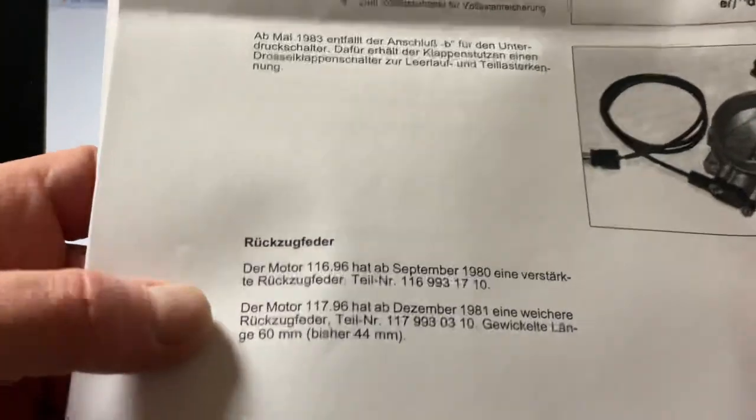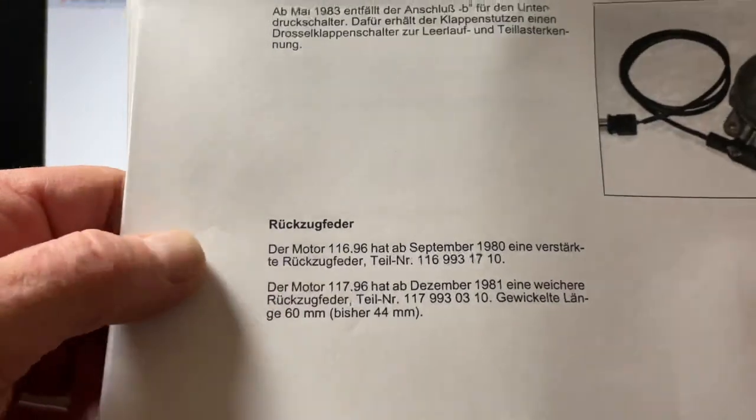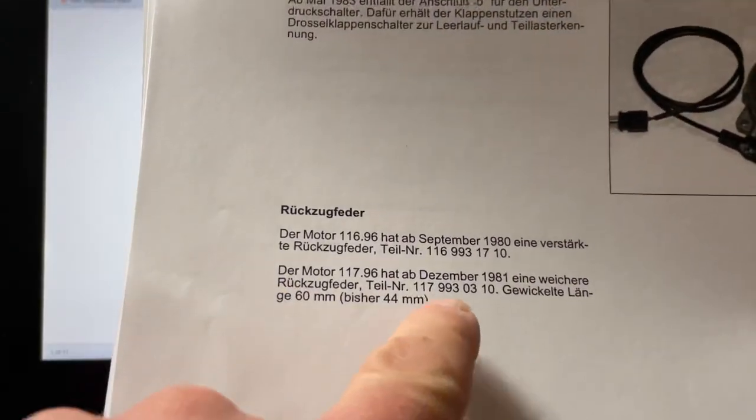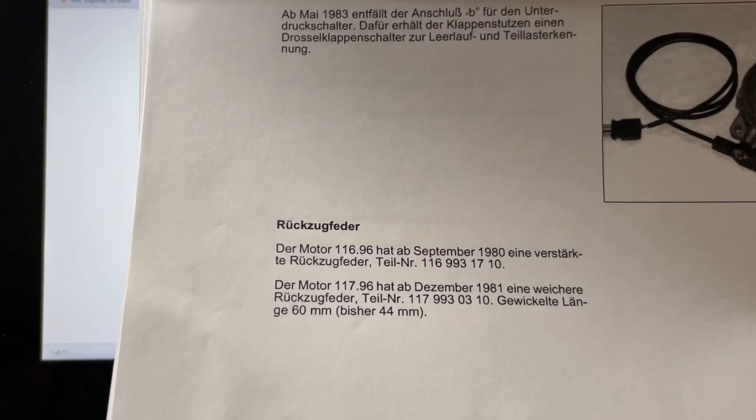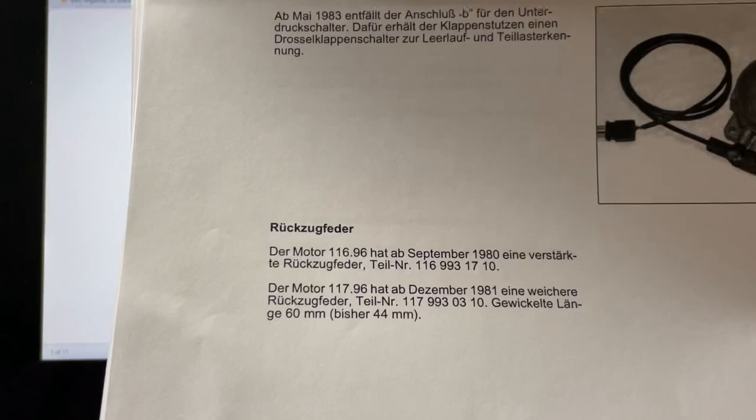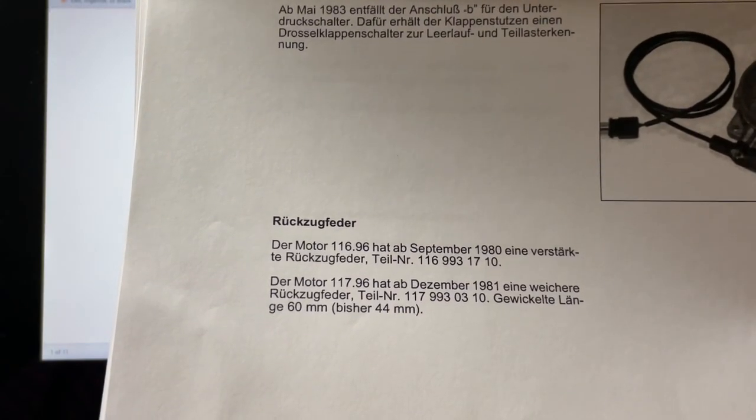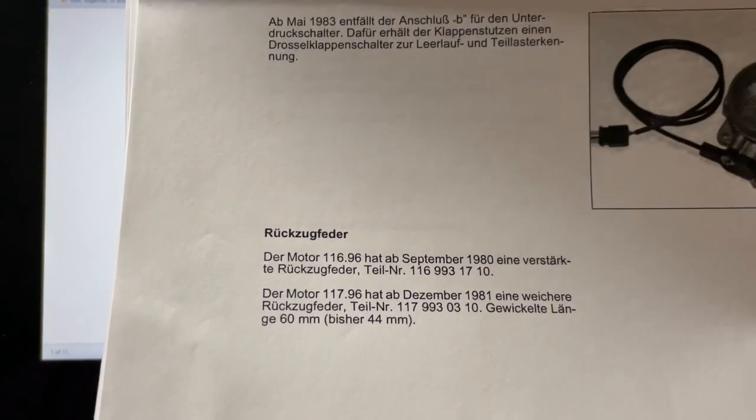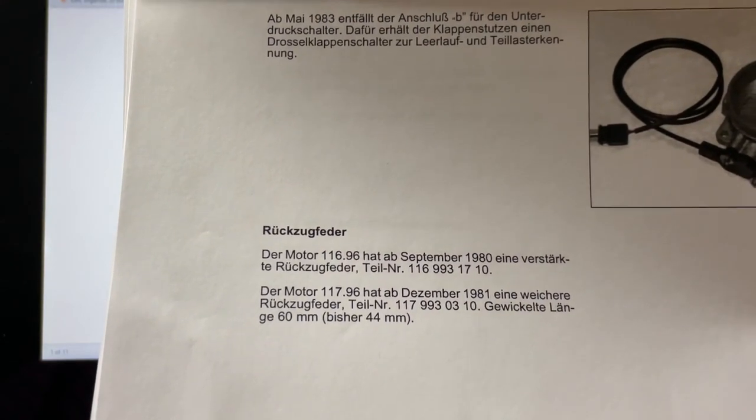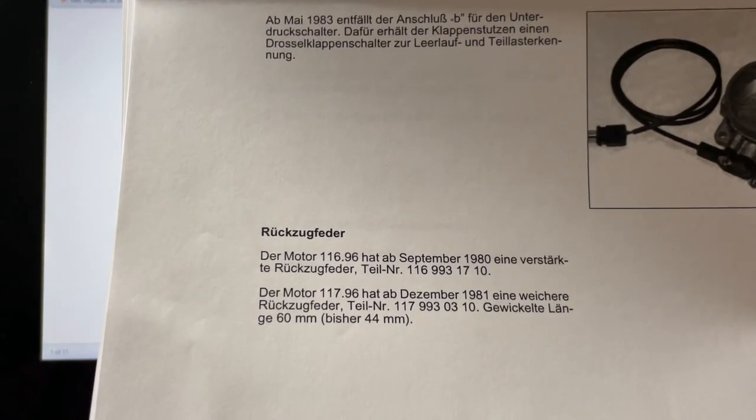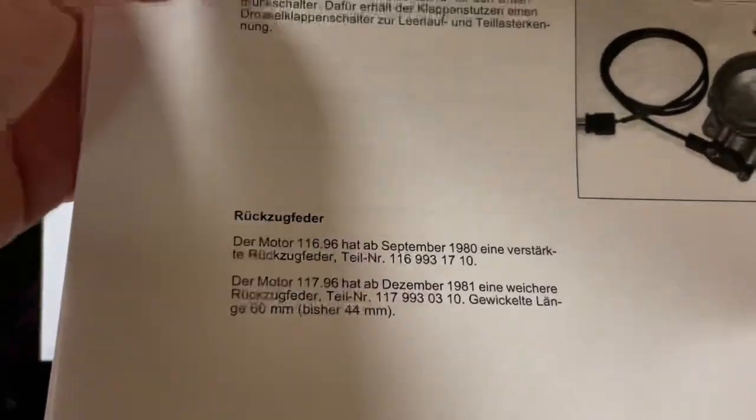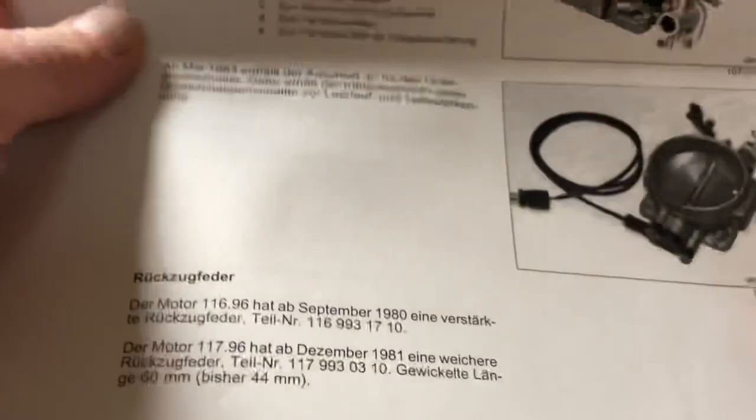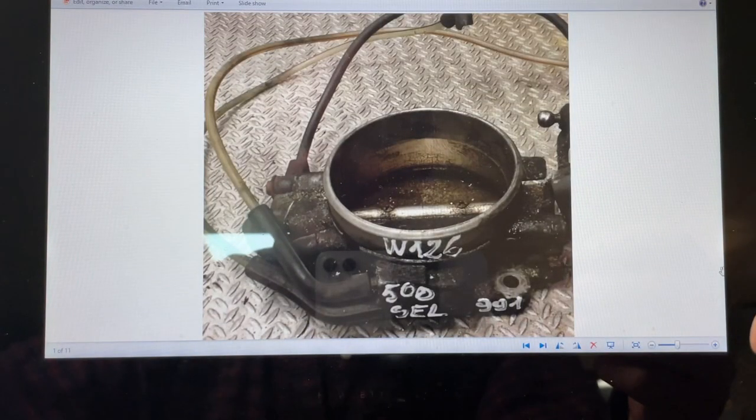Down here is a part you may want to write down: 117-993-0310, because that is the return spring you may also want to check in case your throttle gets stuck, because that is the issue behind this whole thing. Now I want to recap this, and that's the reason why I made the video.